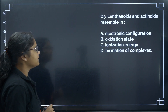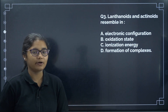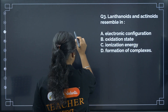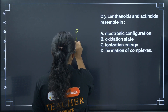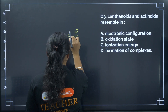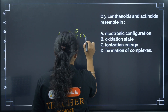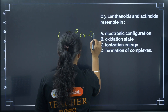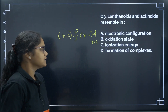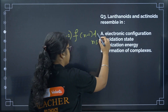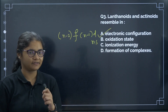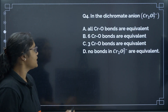Question 3: Lanthanoids and actinoids resemble in what? They both have (n-2)f, (n-1)d, and ns electronic configuration, so they resemble in electronic configuration. The correct answer is option A.